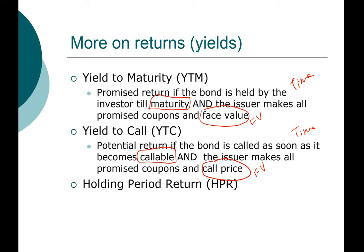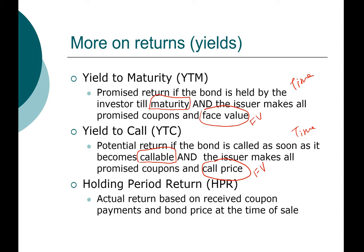Lastly, we want to introduce the concept of holding period return. This is the actual return based on the received coupon payment and the bond price at the time of sale. The coupon payment amount is the same regardless of the three scenarios. However, in the holding period return case, the selling price will be the future price — this is when you sell the bond. The method for computing all these returns is the same, but the timing is different and the size of the future value is different.